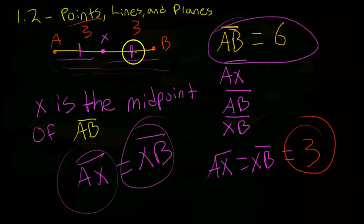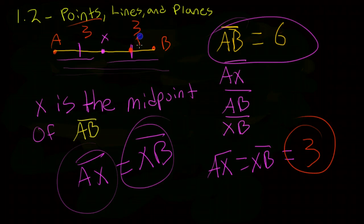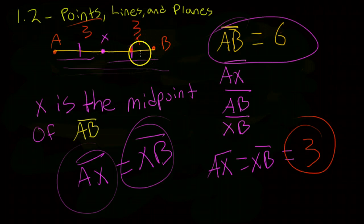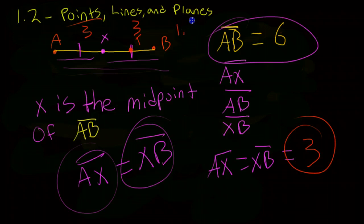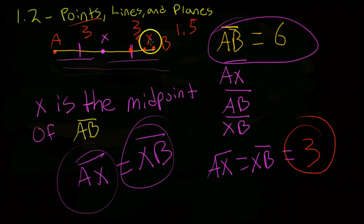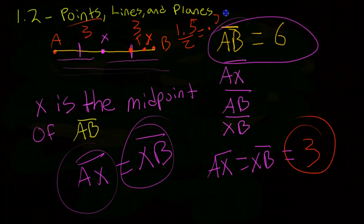And you could do that again. You could say, okay, point T is the midpoint of XB. Now, what would the length of TB be? TB, the length of TB would be half of three, which is 1.5. And you could just keep doing that. You could say point Y is half of, is the midpoint of TB, and then you'd have 1.5 over two, which is 0.75. And you could just keep going on and on and on forever.